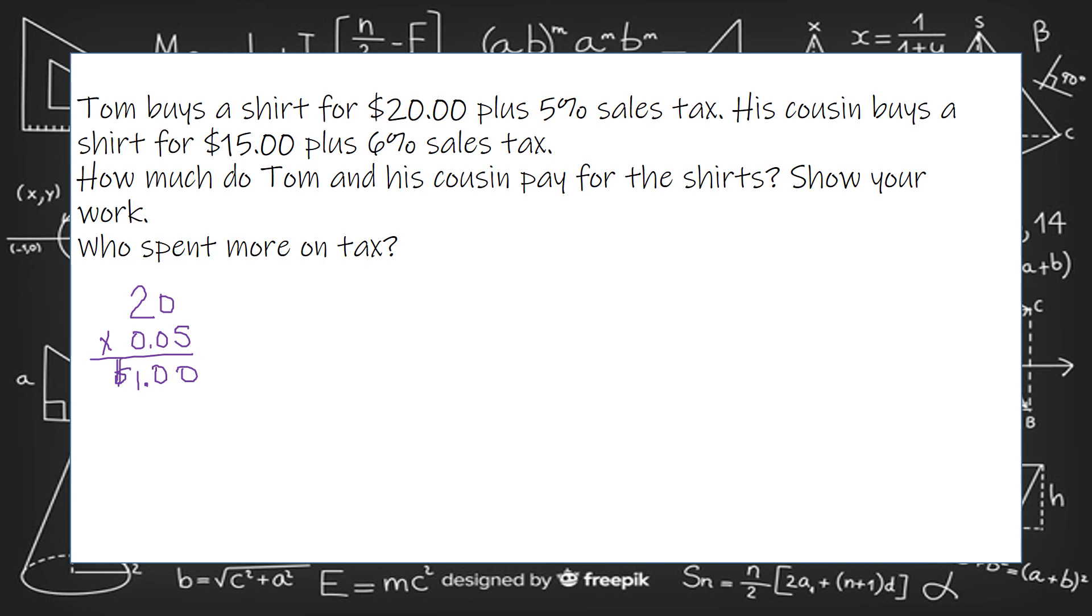His cousin is $15, and he pays 6% sales tax. So 6 times 5 is 30, 6 times 1 is 6, plus that 3 is 9. Two numbers after the decimal.